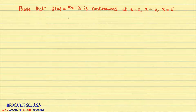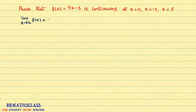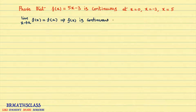Actually, three problems are involved here. You need to know this definition: when we say a function is continuous at x = a, we know that limit as x approaches a of f(x) equals f(a). If this holds good, then we say that f(x) is continuous at x = a.